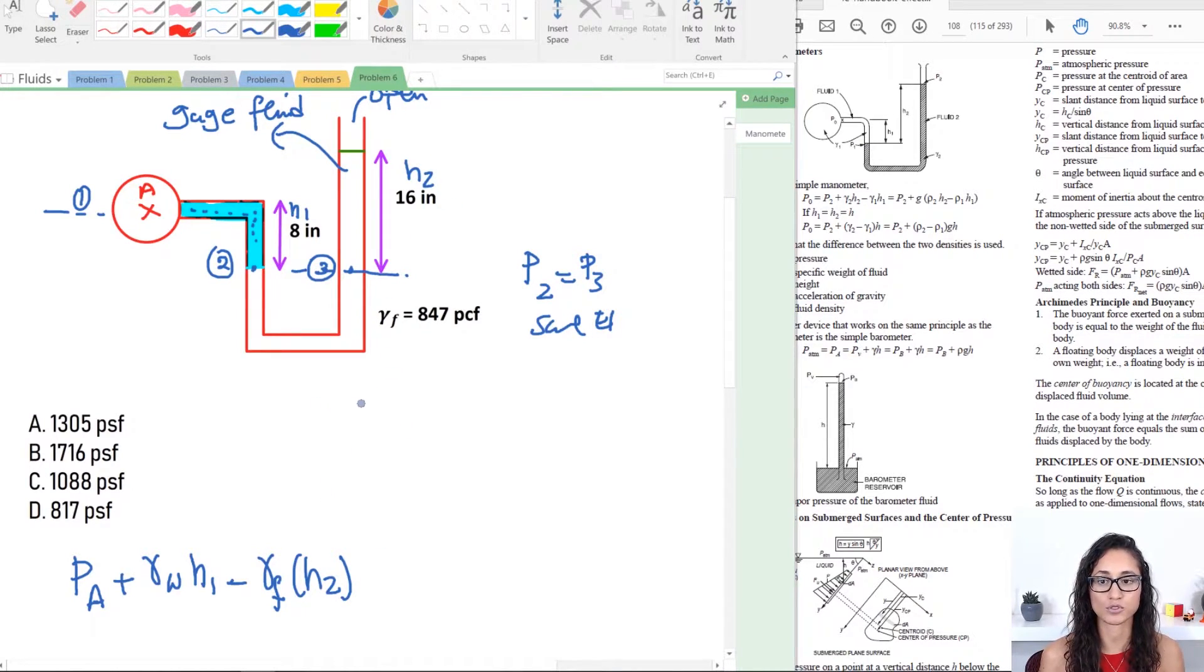So now at this point right here to here, again I have the same pressure. So my pressure P2 is equal to P3 because I am at the same elevation. So the elevation didn't change, that means your pressure still stays the same, so nothing happens here.